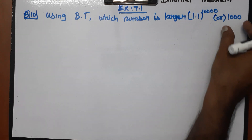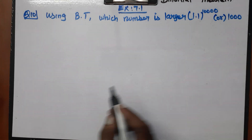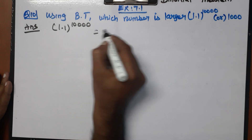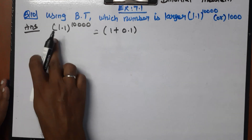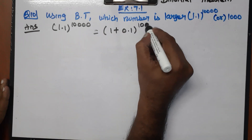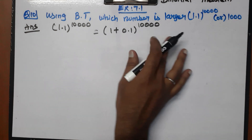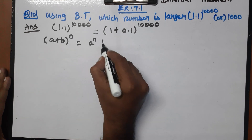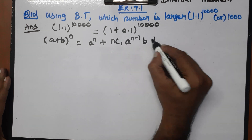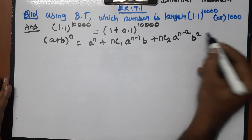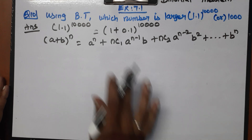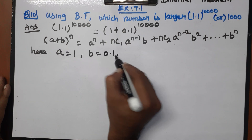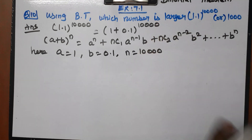The answer is 1.1 whole power 10,000. We separate 1.1 as 1 plus 0.1, so we have (1 + 0.1) whole power 10,000. Here A = 1, B = 0.1, and N = 10,000.